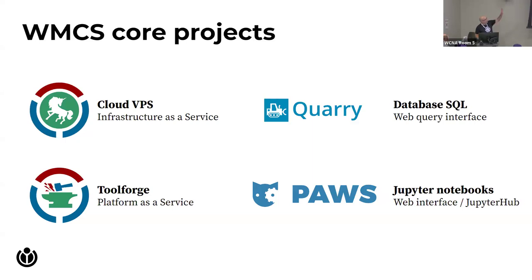Cloud Services itself is a collection of projects hosted by the Wikimedia Foundation designed to provide platforms and services for use by the Wikimedia technical community. Cloud VPS — with the cute unicorn up there in the corner — is kind of the base of almost everything we do. It's intended to be a stable performance hosting platform for Wikimedia Foundation affiliates and community-developed software projects which, for one reason or another, can't be hosted in the main production cluster at the Wikimedia Foundation.